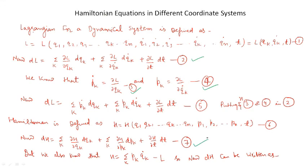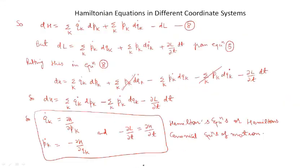We also know that the Hamiltonian is equal to sigma_k pk qk_dot minus L. Now if we find the exact differentiation of this, then we can write dH equal to sigma_k qk_dot dpk plus sigma_k pk dqk_dot minus dL. Let us say it is equation number 8.